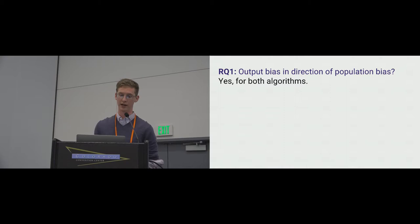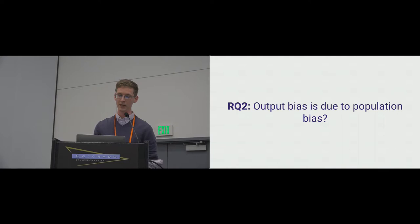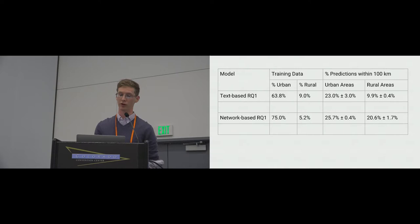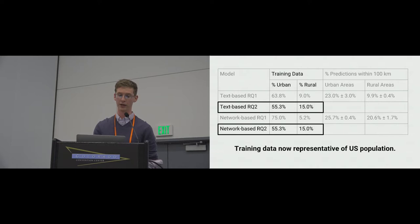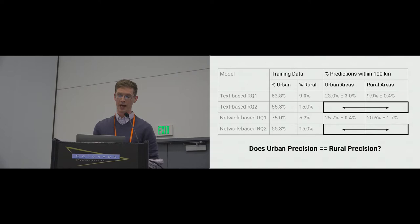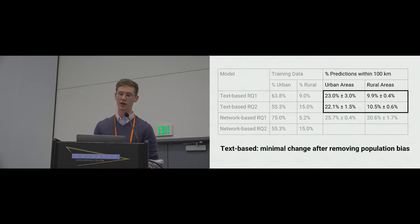At this point, we just have a correlation, which does not mean that the output bias is actually caused by the population bias. To test that, in research question two we remove the urban-rural bias in the training data and again measure output bias. We train new models where the only difference is the balance of urban-rural training data — resampled to be representative of the U.S. population, which in practice means less urban training data and more rural training data.